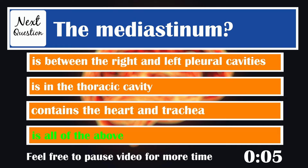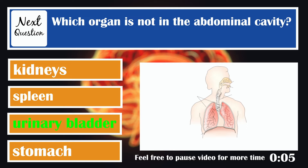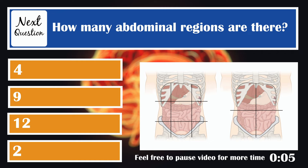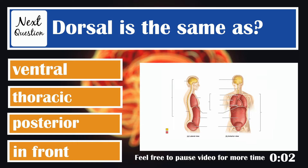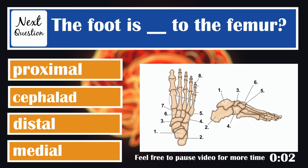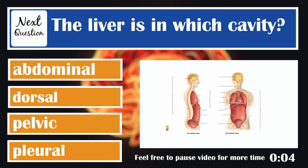Which organ is not in the abdominal pelvic cavity? The urinary bladder — it's in the pelvic cavity. How many abdominal regions are there? Nine. Dorsal is the same as posterior. The foot is distal to the femur. The liver is in which cavity? The abdominal, which is the right upper quadrant.